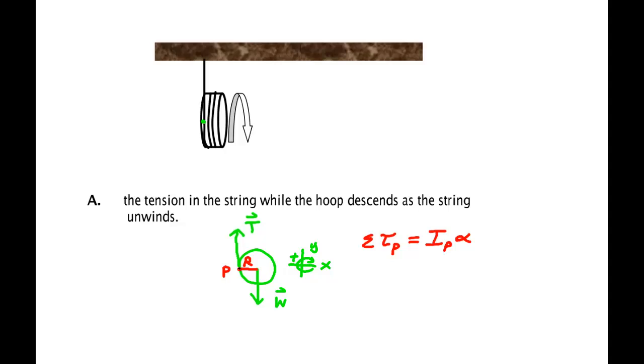But if I calculated about this point here, the tension then has no moment arm. It doesn't produce a torque. The weight produces a torque, but I know that force because I was given the mass. So that's why I choose this point P to do my torque calculation. I have weight times R in the positive direction, and that's equal to the moment of inertia at point P times alpha. Weight, that's MGR, equals IP times alpha.